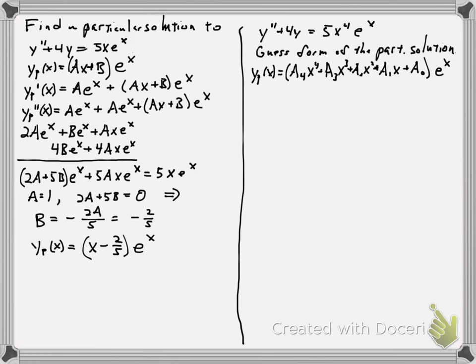So you can imagine having to do this. There's five undetermined coefficients. Plugging this into the left-hand side and matching left-hand side to right-hand side would lead to a system of five linear equations of five unknowns. We won't go through the details, but this is what the guess would be.